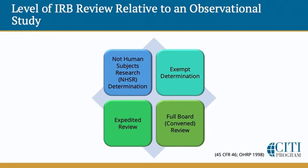Similarly, should an investigator be provided with biospecimens with absolutely no links back to the subject, this activity could fit an NHSR classification. However, more often than not, there exists the potential to link data back to the individual and the IRB professional will select exempt category 4 to best classify the research. Many observational research studies that present to the IRB are no greater than minimal risk and will qualify for either an IRB exemption or the expedited review process.